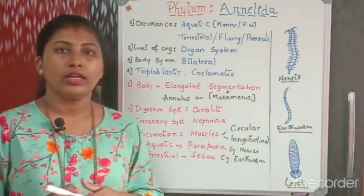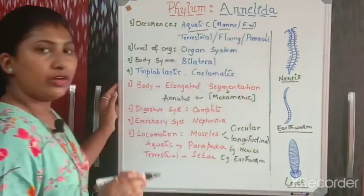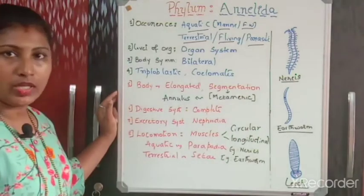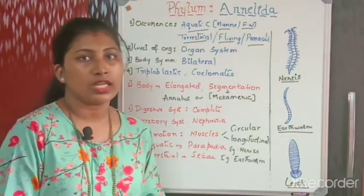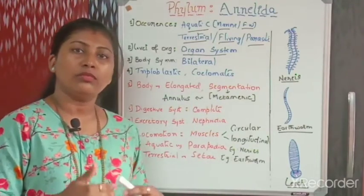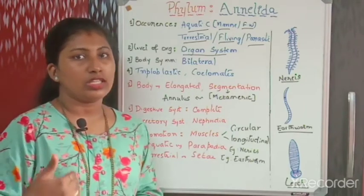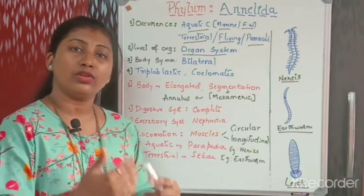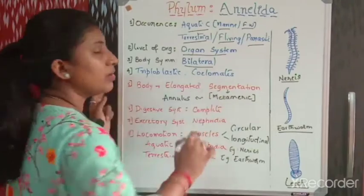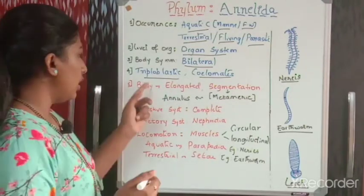So this is all about Phylum Aschelminthes. The next phylum is Phylum Annelida. In Kannada they are called valay vantukalu. They are found in aquatic regions, either marine or freshwater, or some are terrestrial animals. They may be free-living or parasitic. They exhibit organ system level of organization.